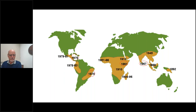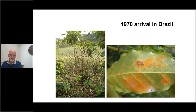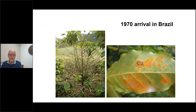The rust eventually arrived in Brazil in 1970 — Brazil was and still is the largest coffee producer in the world. Many small countries in Central America depend on coffee as their main source of income and export. Management of coffee leaf rust has relied on fungicide applications and use of resistant varieties.